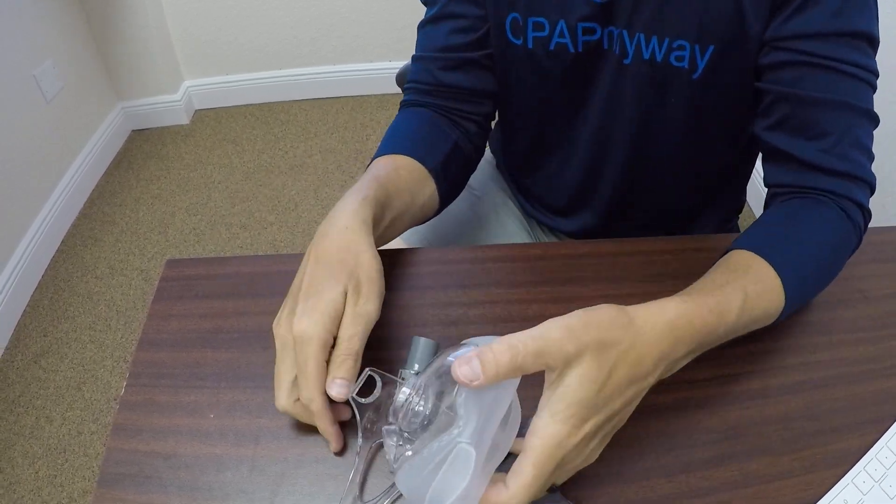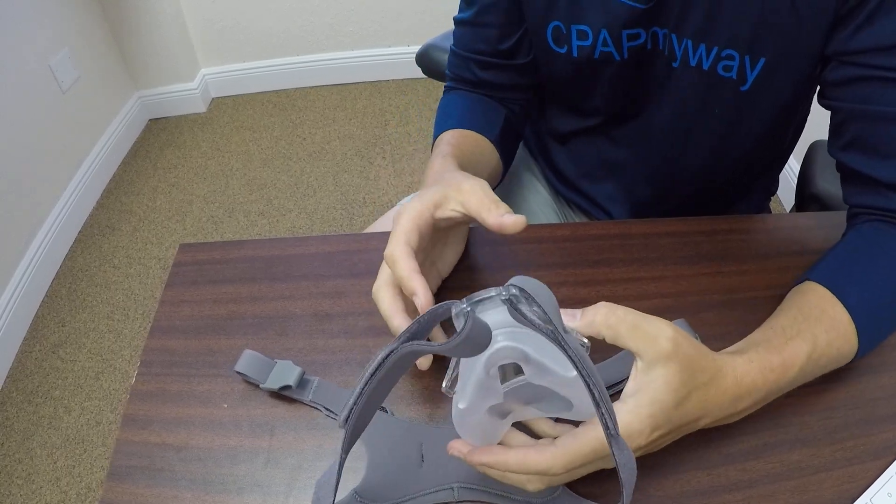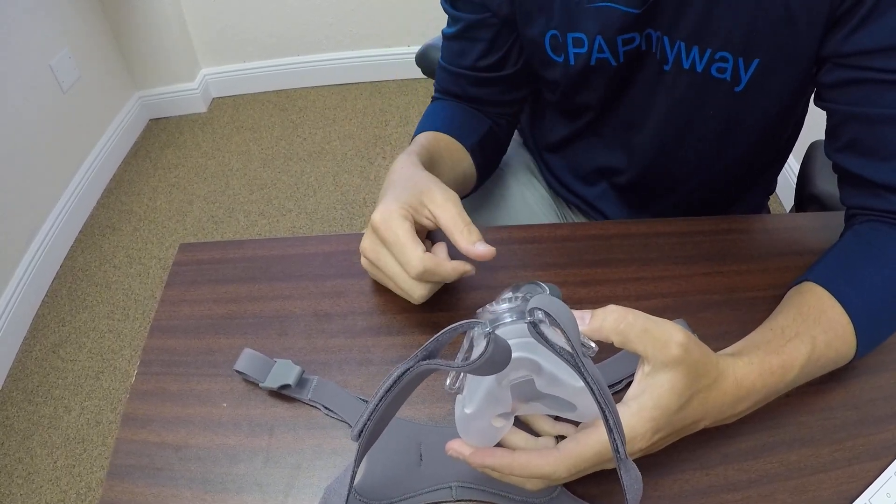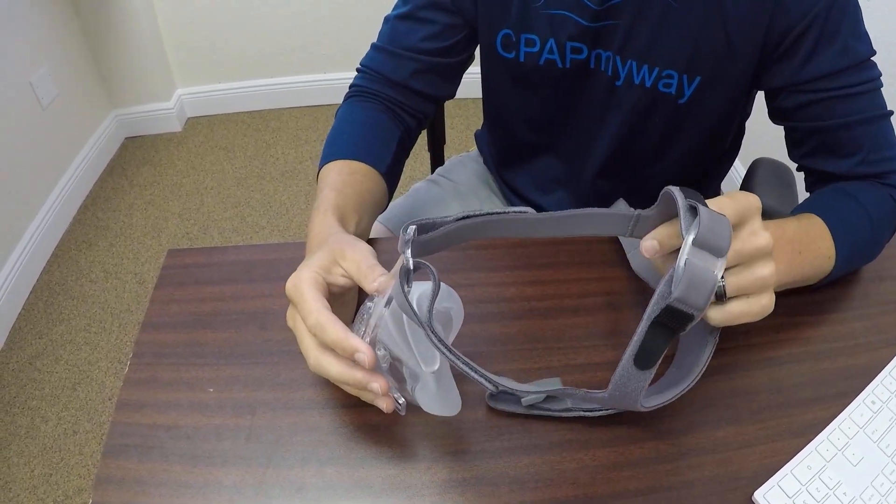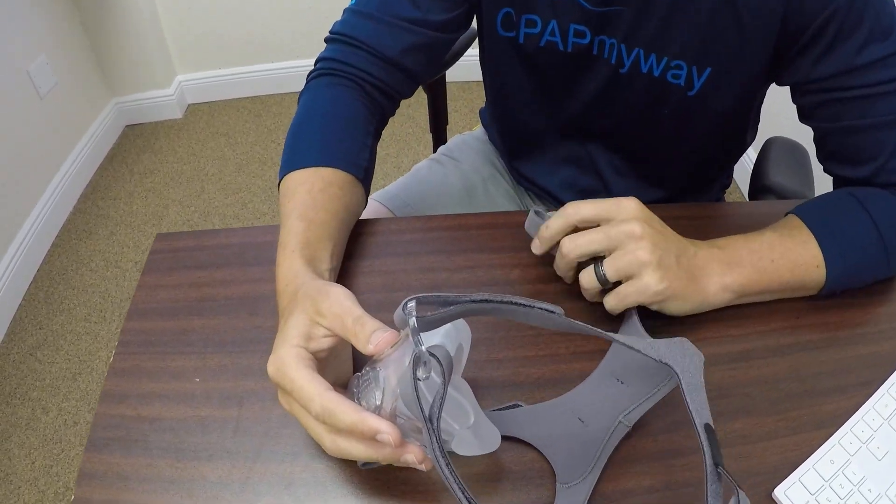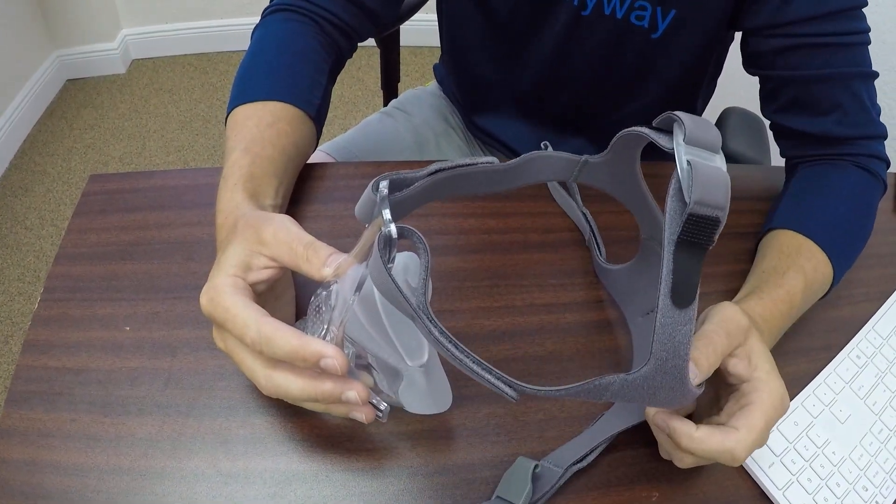They pop on and off very easily, and it has a little gauge that comes along with it. So you can kind of measure between your nose and below your lip to find out which one fits you best. It's a nice mask in the fact that you really don't have to guess what size you are if you're starting for the first time or want to try something new.